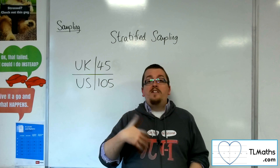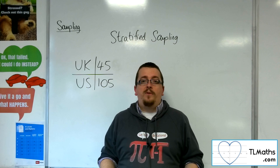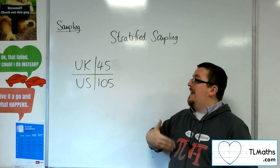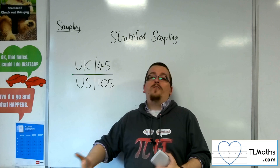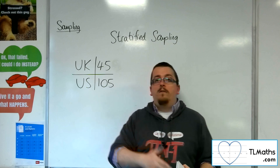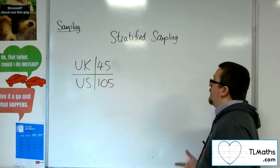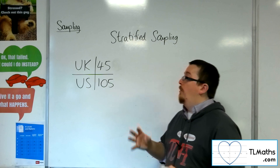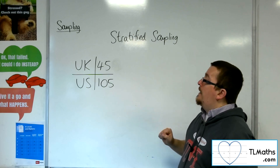The reason I might do this, rather than combining all those people together and doing a simple random sample, is that in a simple random sample I could get more people from the UK than from the US. That could then have an effect on the survey's results if I'm expecting some difference in opinion on certain items in the questionnaire. So I would want to get a proportional representation of the UK and the US.